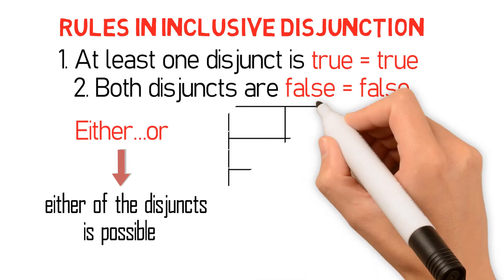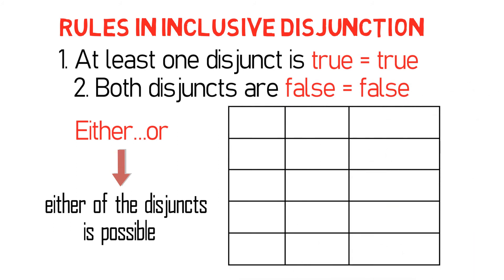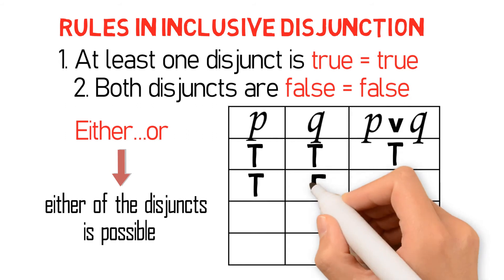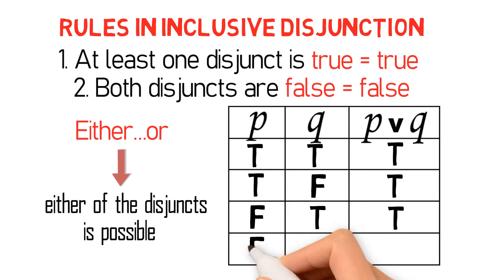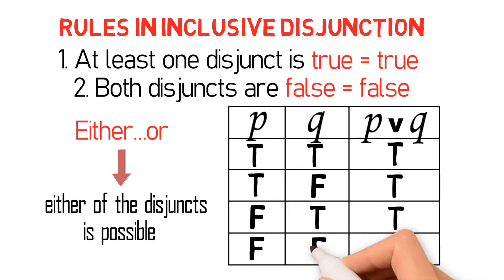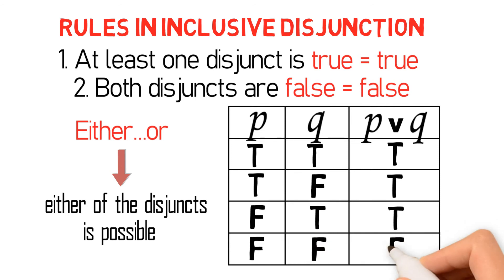Let me illustrate that point in a truth table. If P is true and Q is true, then P or Q is true. If P is true and Q is false, then P or Q is also true. If P is false and Q is true, then P or Q is also true. And if P is false and Q is false, then P or Q is false.